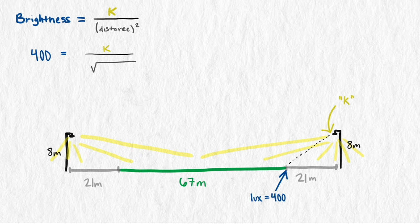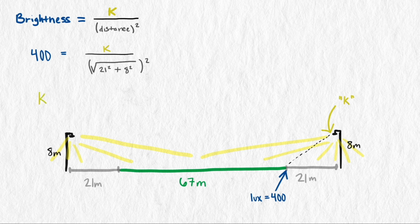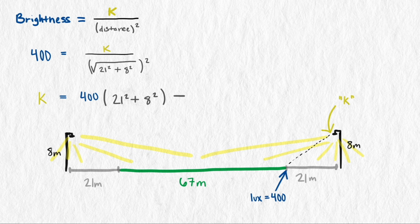To solve for k, let's first find the distance. By the Pythagorean theorem, we have the square root of 8 squared plus 21 squared. Plugging that in for the distance and using 400 as the brightness will leave us with just k as an unknown. When we multiply 400 by k's denominator, we get k as 202,000.